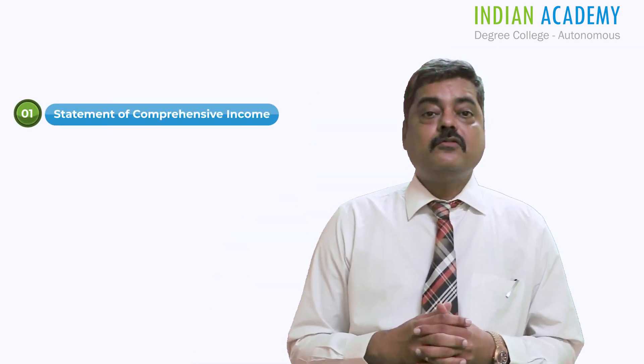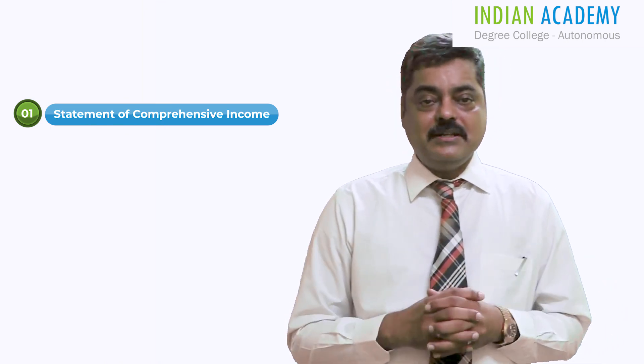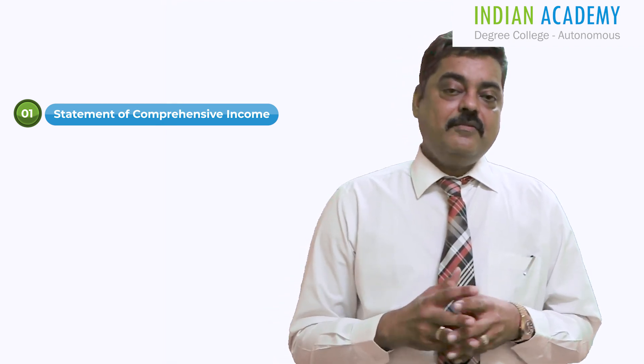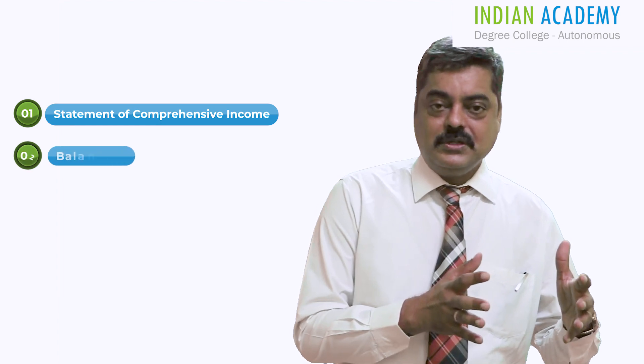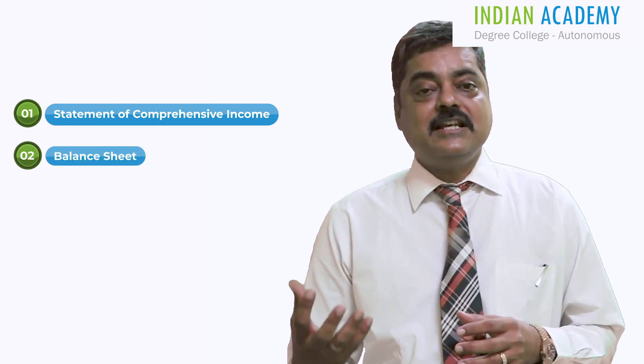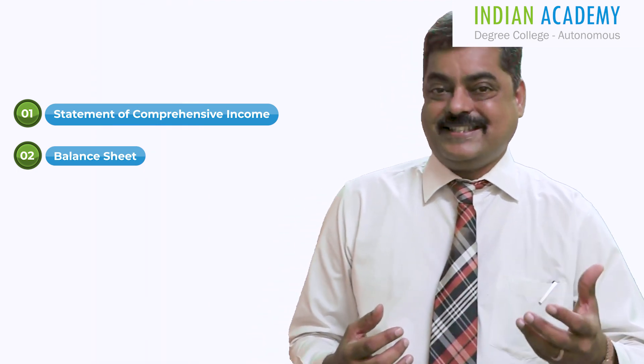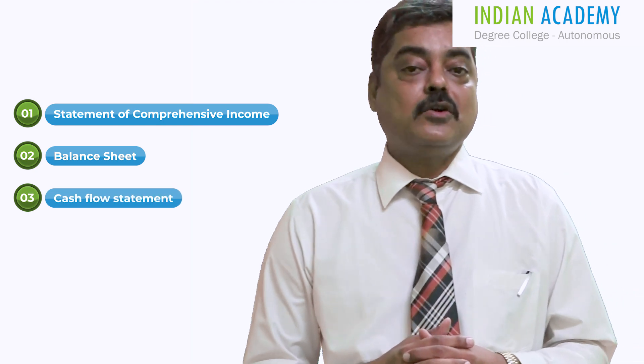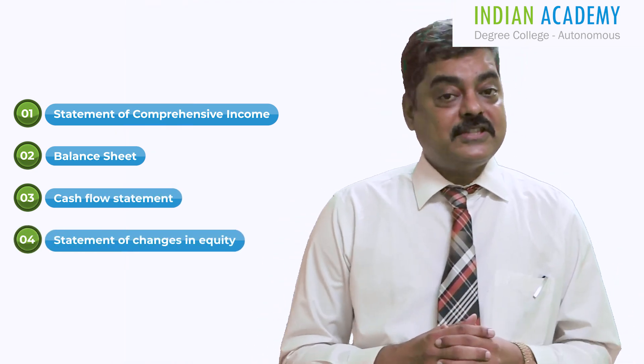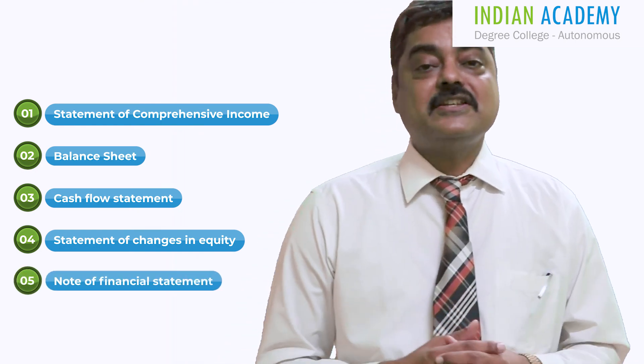Cash flow is a very important item for any company or business. When we talk about financial statements, there are basically five financial statements that any listed company has. Number one: statement of comprehensive income, which deals with income earned and expenses incurred during a financial period. Number two: statement of financial position, which shows the position of a company in terms of assets it owns and liabilities it owes. Third is the cash flow statement. Fourth is the statement of changes in equity, and fifth is notes to the financial statements. All these together are called financial statements.